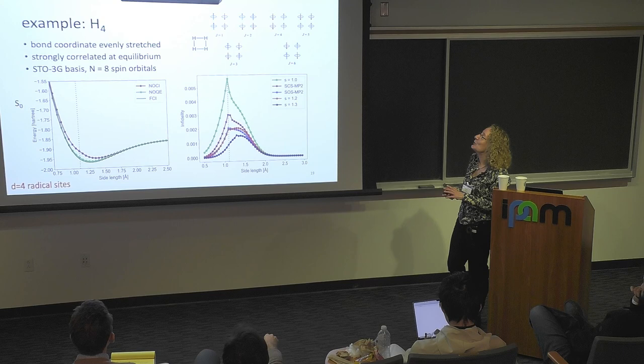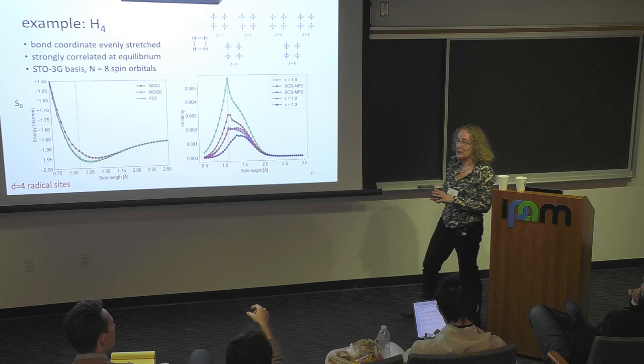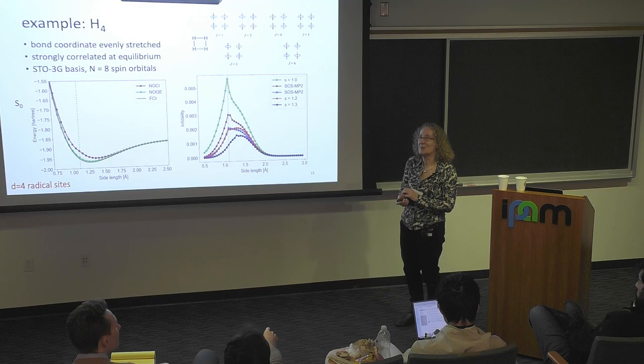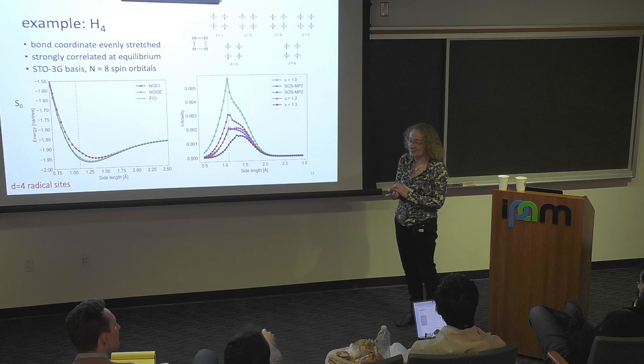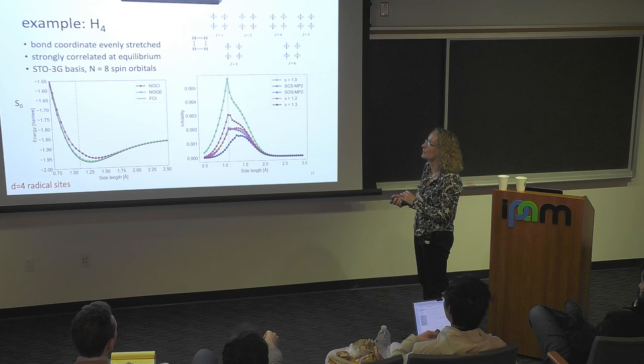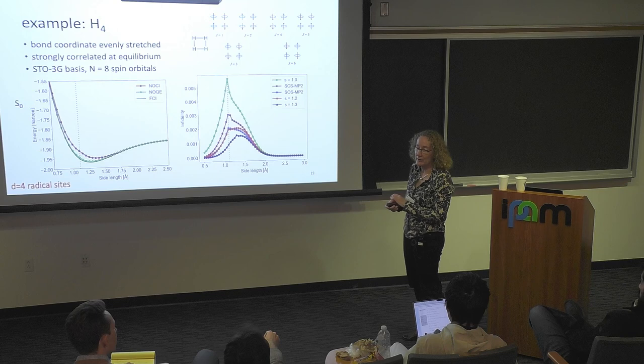H4 in a square is a very interesting system for correlations — it's even strongly correlated at equilibrium because of the four-fold symmetry. One could make similar models with hydrogen chains, octahedral hydrogen six, and so on. We also developed a variational version of this approach earlier and used it to look at hydrogen chains.